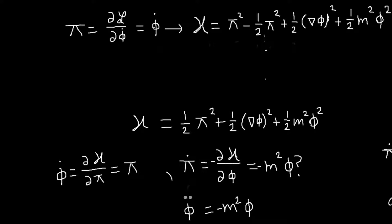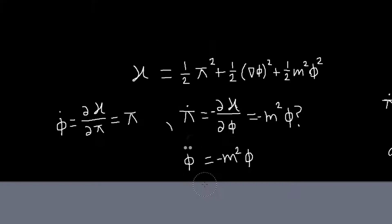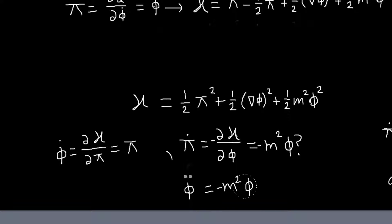That pi dot is negative derivative of the Hamiltonian with respect to phi. So at first glance, we would say, okay, well, the only term that depends on phi is this last term. So we should have this equation. So pi dot will be phi double dot. So we're led to this equation of motion, which is notably not the Klein-Gordon equation.